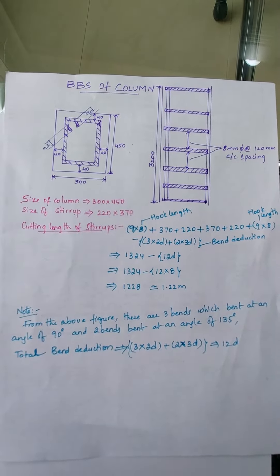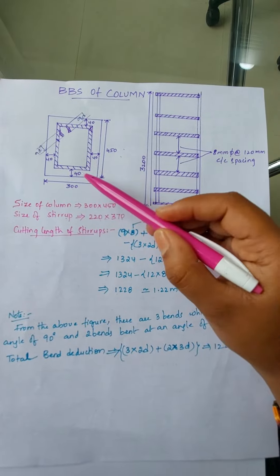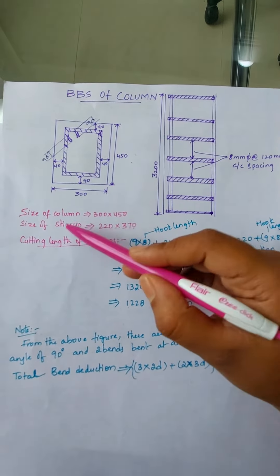Hello all, today's topic here is bar bending schedule of column. Here you can see the length, width, and depth of a column. This 40mm which is provided on all sides is clear cover, so size of column is 300mm by 450mm.